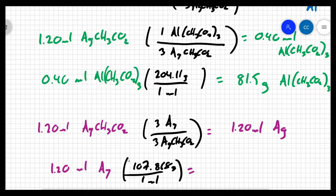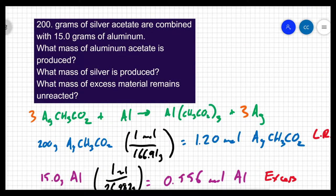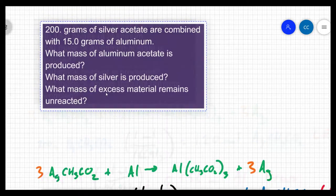The final part of this question is they want to know what mass of excess material remains. In other words, what mass of aluminum will I have unreacted when this process is over? And let me plug in what we know.